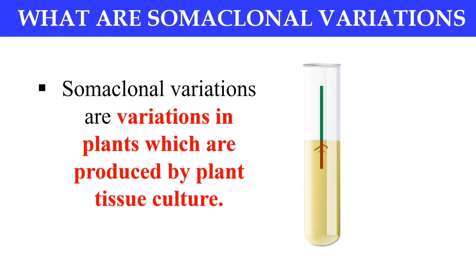So, first of all, what are somaclonal variations? These are the variations which are produced in plants developed through plant tissue culture. In simple words, somaclonal variations are the variations shown by plants produced through plant tissue culture, because when we make a plant via plant tissue culture, certain variations are developed in that particular plant. These variations which are due to plant tissue culture are known as somaclonal variations.